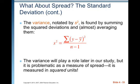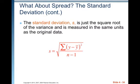The variance will play a role later in our study, but it is problematic as a measure of spread — it's measured in square units. So if we're looking at the height of six-year-olds in inches, the variance would be in inches squared, which is not useful for making comparisons. So we take the square root of it. The standard deviation S is just the square root of the variance and is measured in the same units as the original data.